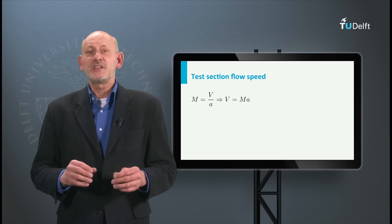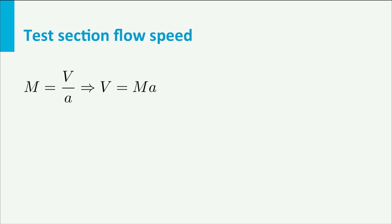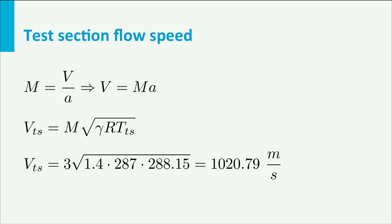With the definition of the Mach number we get V = M × a. We know M in the test section, so we have to find the speed of sound in the test section. This equals √(γRTTS). The temperature is also known, since we have standard sea level conditions in the test section. So finally, the speed in the test section equals 3 × √(1.4 × 287 × 288.15), which gives a velocity of 1020.8 m/s.